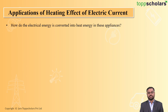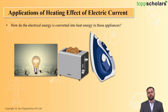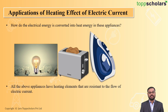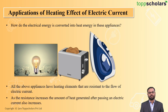So how does electrical energy get converted into heat energy in these appliances? In an electric bulb, heater, or electric iron, these appliances have a heating element — nothing but resistors — and they oppose the flow of electric current. Because of this opposition, heat is generated. Whenever current flows through these resistors, heat is generated. As the resistance increases, the amount of heat generated after passing the current will also increase.